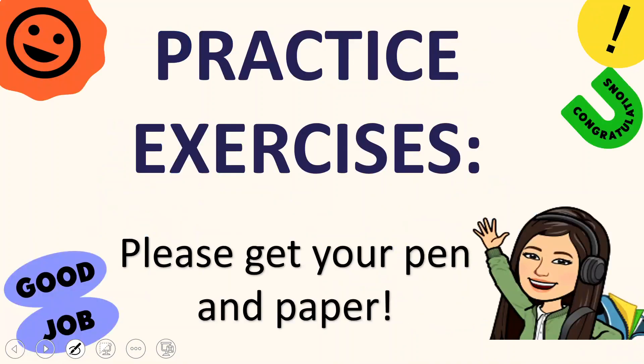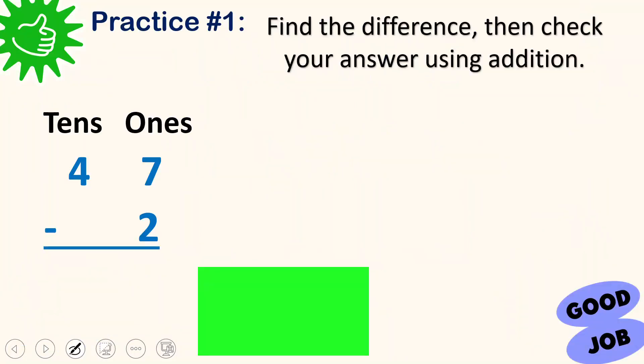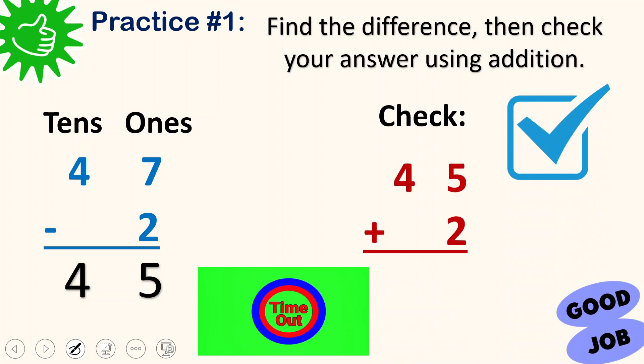It's time for you to practice. Please get your pen and paper. Ready? Let's check. 7 minus 2 is 5. And then 4 minus 0 or nothing is still 4. So let's check. We add 45 and 2. 5 plus 2 is 7. And then bring down 4. Yay! They are the same.